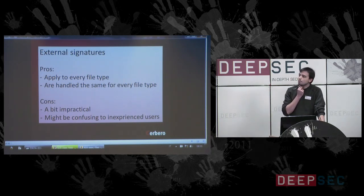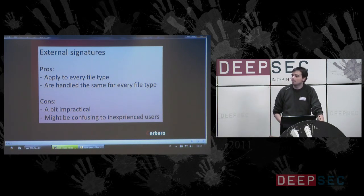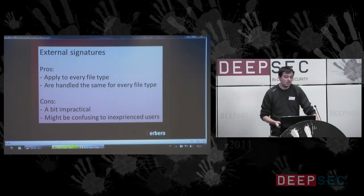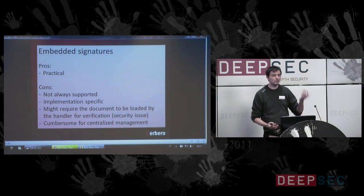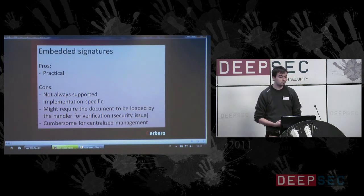External signatures have advantages: they apply to every file and are handled the same for every file type. If we have OpenSSL or PGP and we sign a file, the signature will always be in the same format. The cons: it is a bit impractical — it forces every file to have an attached signature, and it might be confusing for inexperienced users. Embedded signatures: in this case the signature is embedded in the file format itself. It is practical — that is the only advantage. It is not always supported; many file formats don't support this at all.